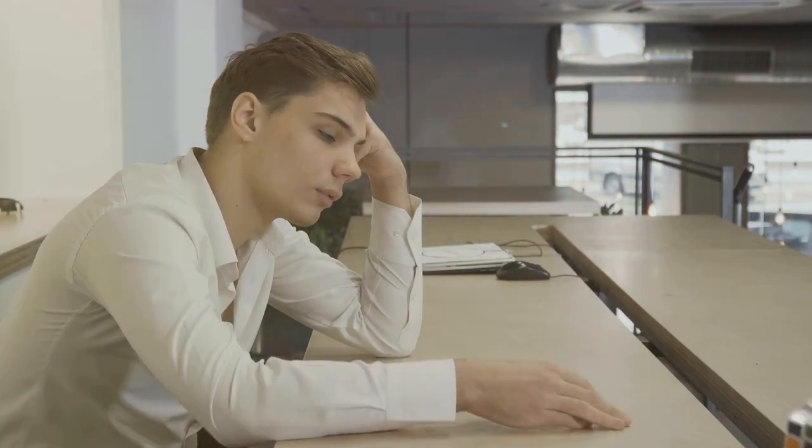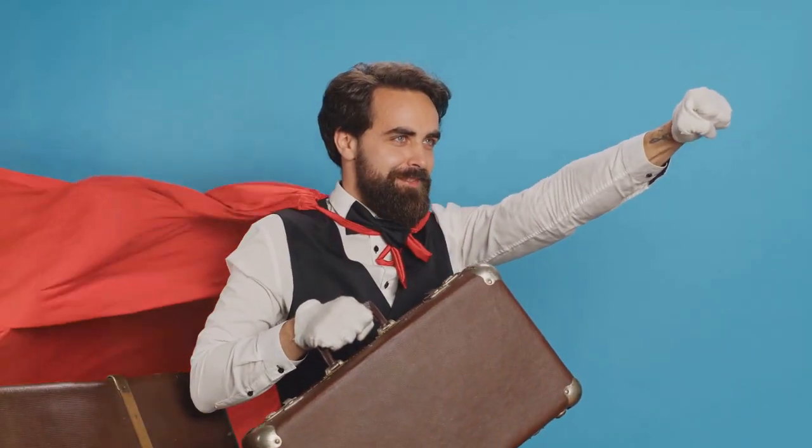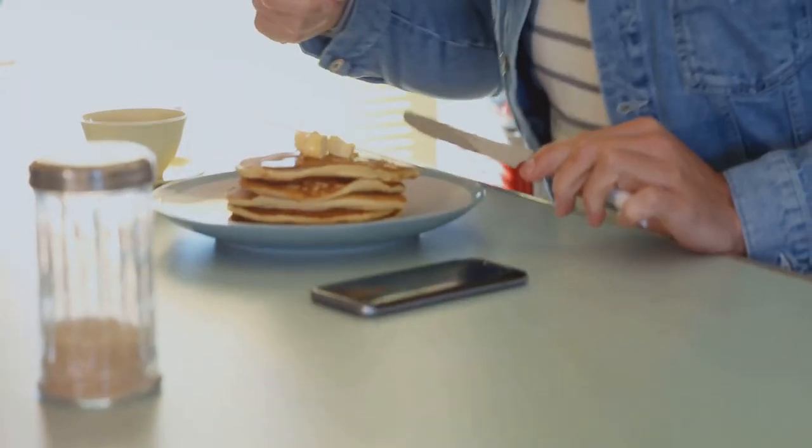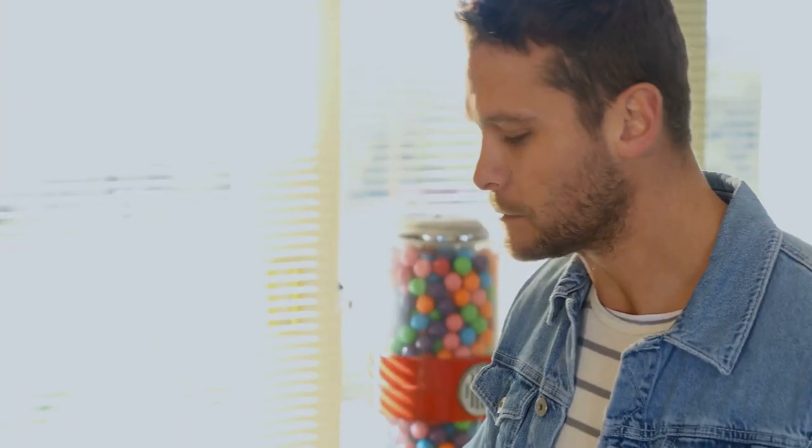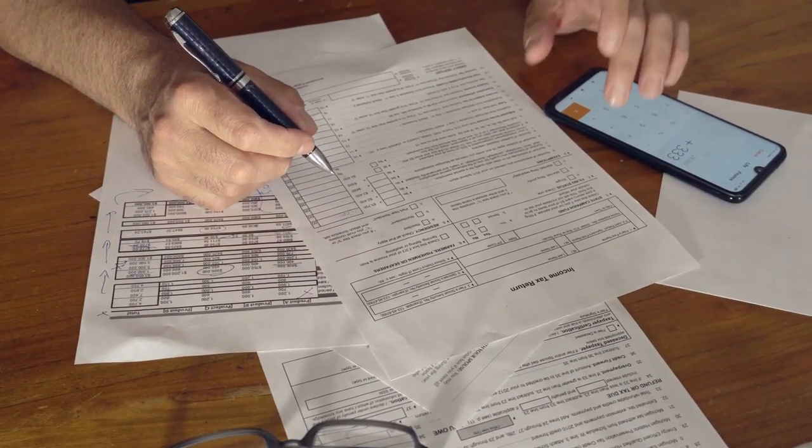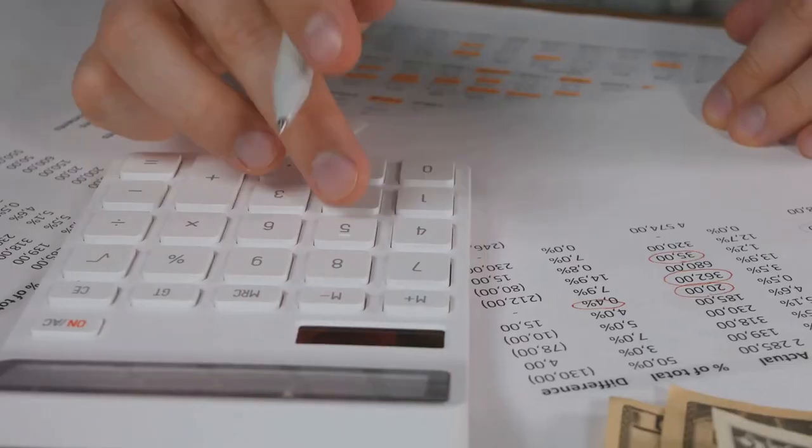Enter Coin Ledger. Think of them as your crypto tax superhero. They take your complicated transactions and make the tax part as smooth as butter on a hot pancake, only you know, less messy.